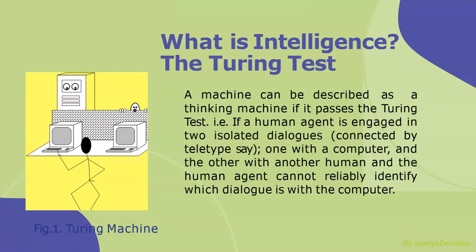The next topic is about the Turing test. In 1950, Alan Turing introduced a test to check whether a machine can think like a human or not. This test is known as the Turing test. In this test, if a human agent is engaged in two isolated dialogues — one with a computer and another with a human being — and the human agent cannot reliably identify which dialogue is with the computer.